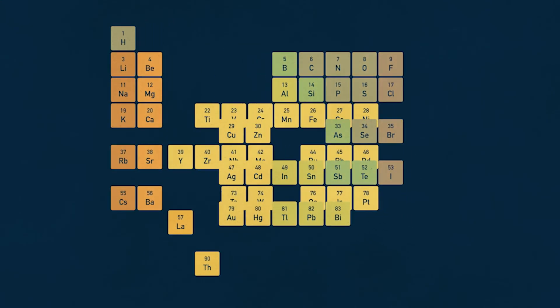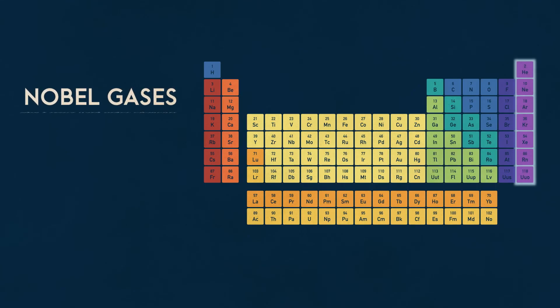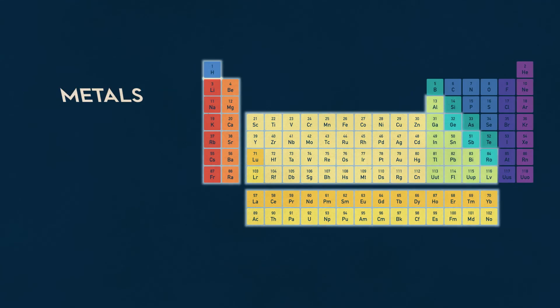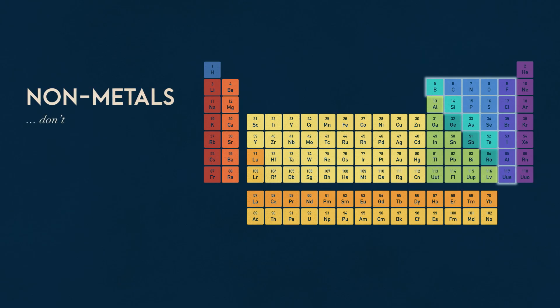Today we know of almost twice as many elements as Mendeleev and his contemporaries did, so the table has had to grow substantially. On a very basic level, you can divide up the periodic table into three types: noble gases, metals, and non-metals. Noble gases don't react with other elements. Metals conduct heat and electricity, and they flatten into sheets or stretch into wire very well. Non-metals don't.